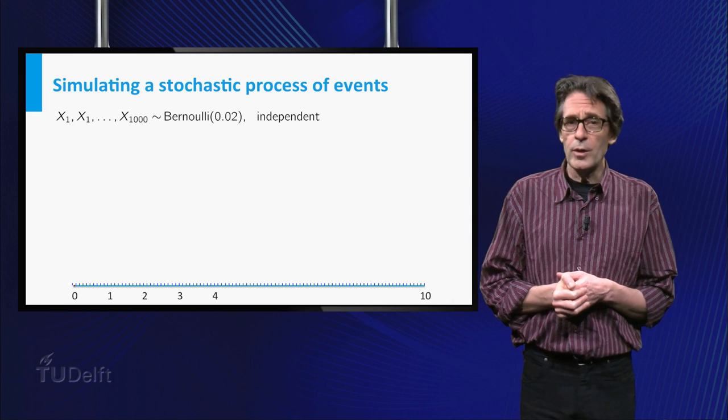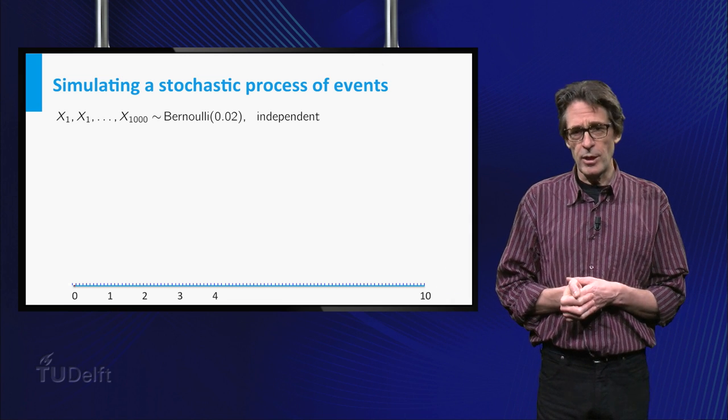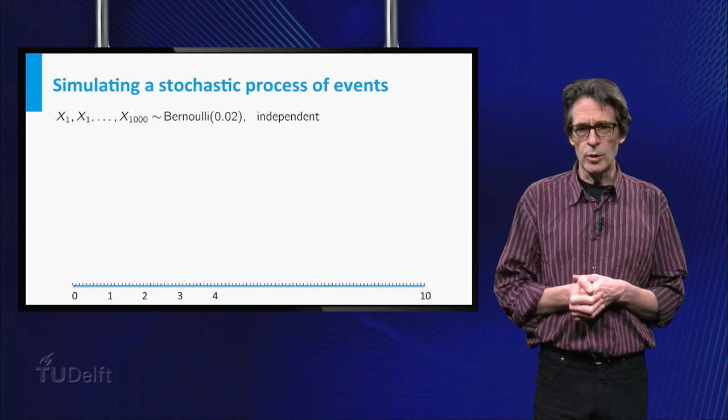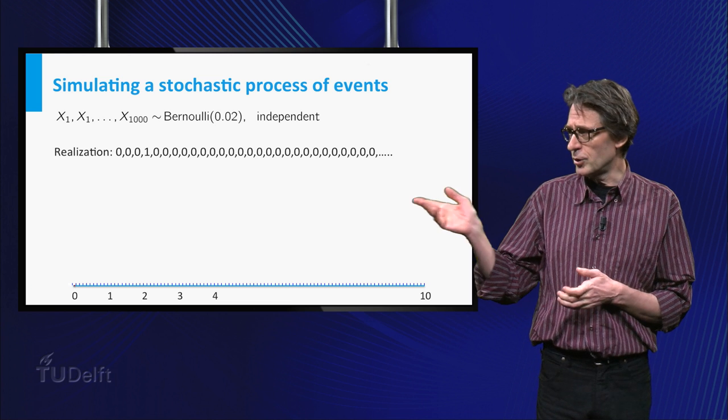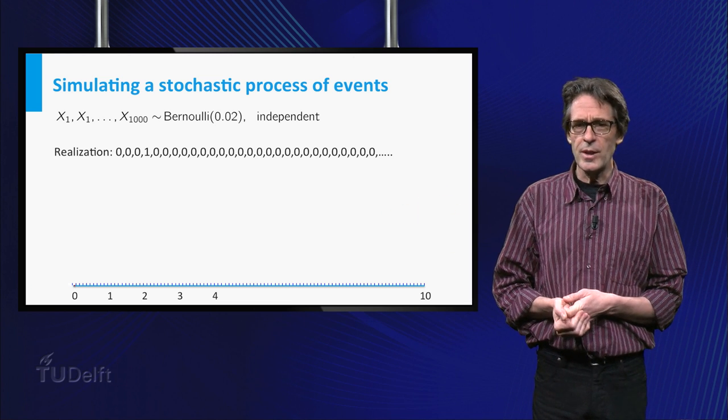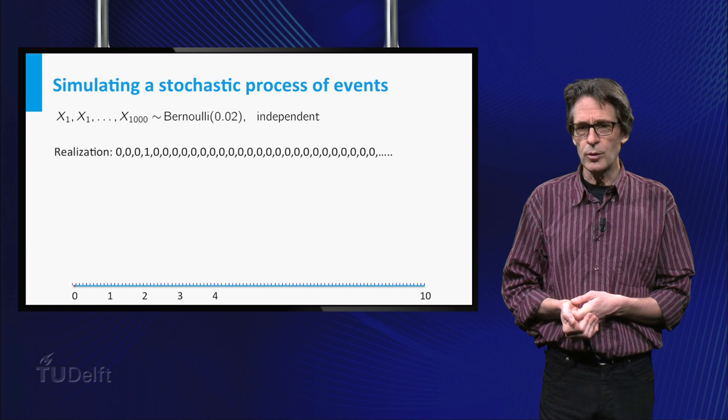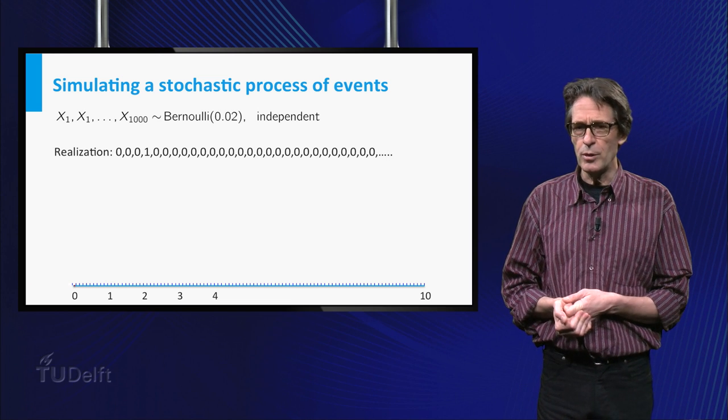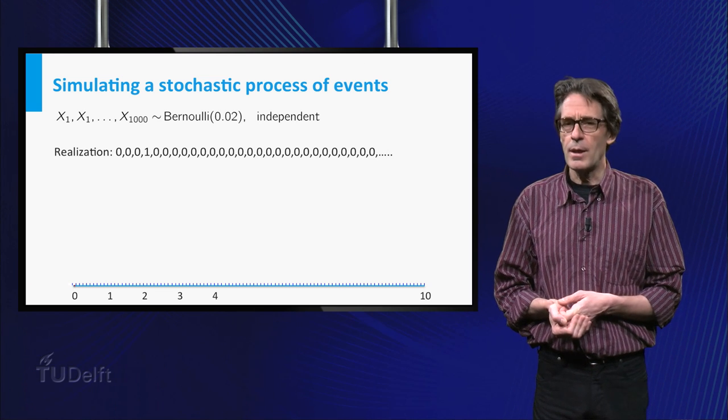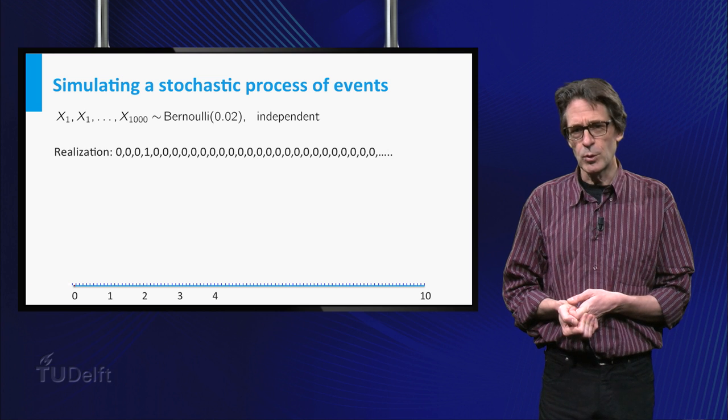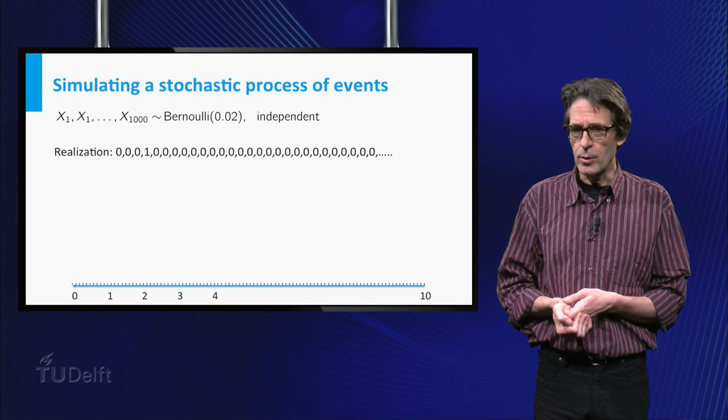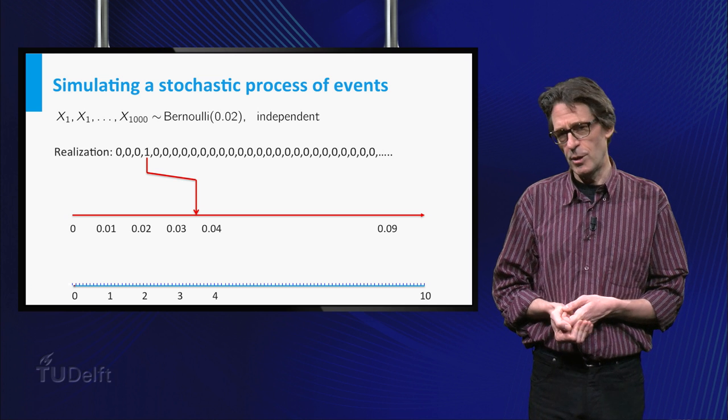In class you will learn how to simulate such Bernoulli random variables. The start of this sequence of zeros and ones could look like this. Now we say there is a random point in the ith subinterval if the corresponding Bernoulli variable Xi gets the value 1. In our example the fourth Bernoulli variable equals 1 and we indicate the corresponding random point by an arrow at the center of the fourth time interval.